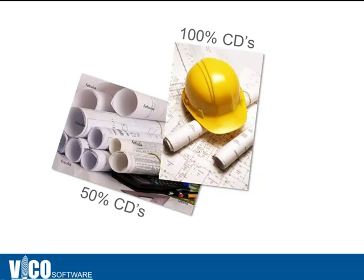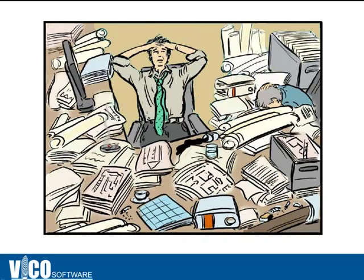So imagine this: take two versions of construction documents from the same project — say a stack of 50% CDs and a box of 100% CDs. Tell me what's different between the two. Any added sheets, new revisions, new or modified details, missing clouds. What about sheet names and keynotes — did they change? Have the dimensions been forced or walls moved?